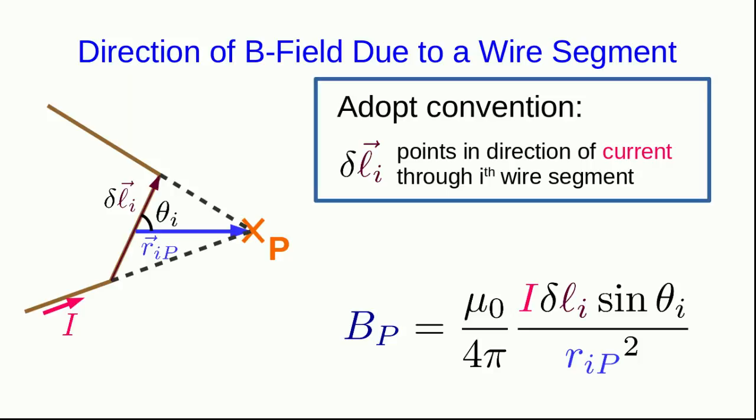All that's left is to come up with how to get the direction. So we want to take this equation and just put a vector symbol over the B. I've been using a convention that the delta L vector points in the direction of the current through that ith wire segment. Using that convention will allow us to come up with a relationship.